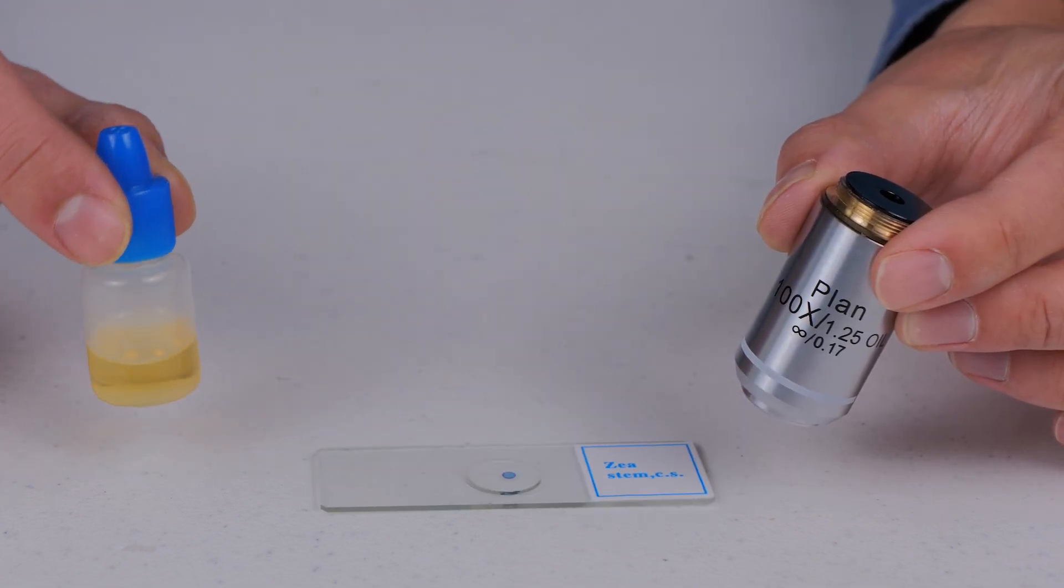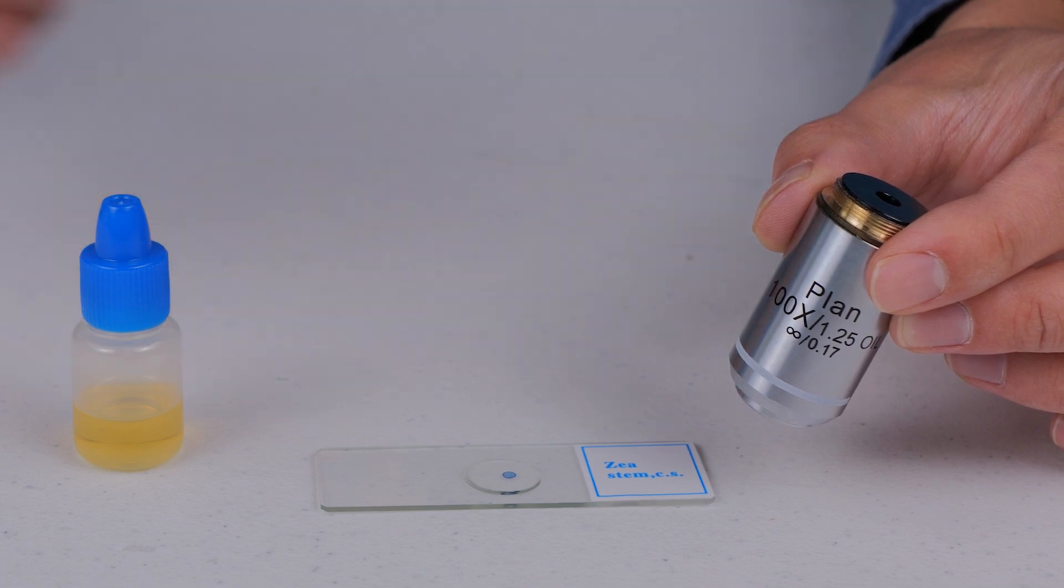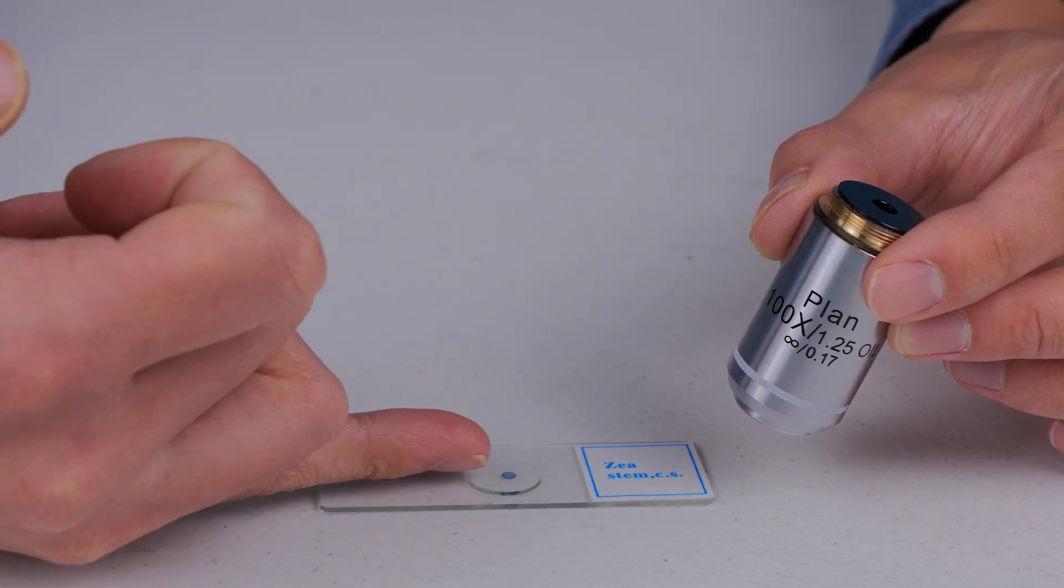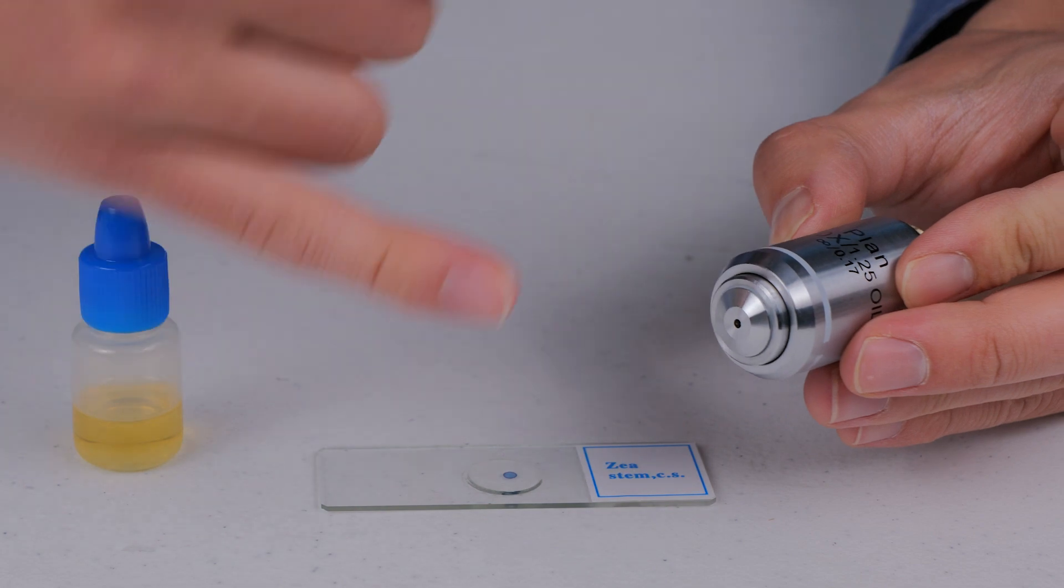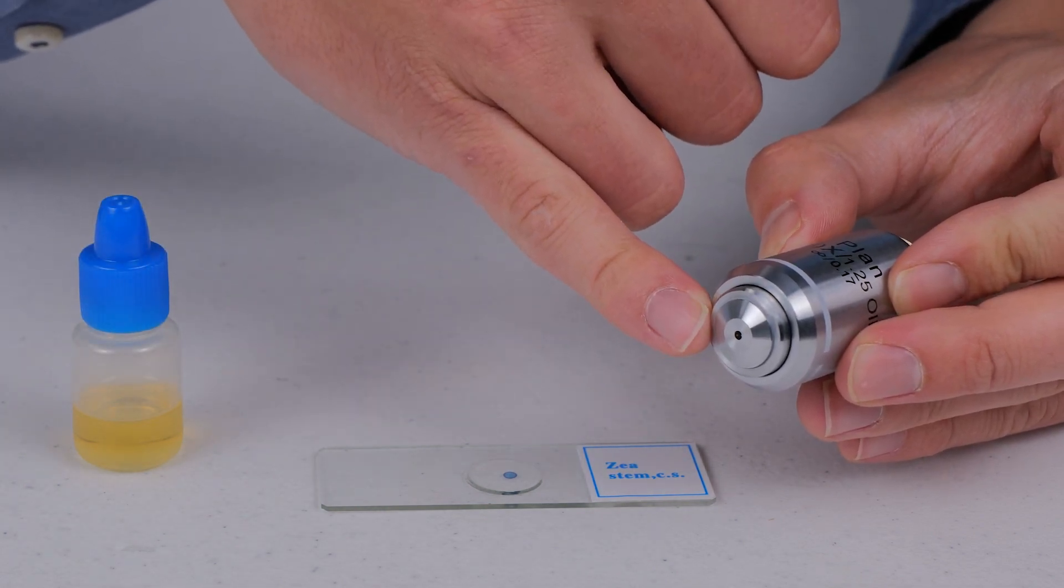And the way that the immersion oil does this is that it matches what's called the refractive indices of the glass of the top of the cover slip and the glass of the bottom element of the microscope objective.